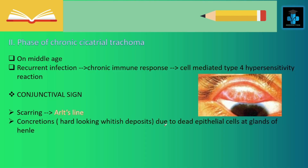We have completed the first phase. Now let's move on to the second phase — the phase of chronic cicatricial trachoma. This is more common among middle-aged people. Because of recurrent infection, there will be a chronic immune response, specifically cell-mediated type 4 hypersensitivity reaction. In the conjunctival signs here, we can appreciate scarring. Due to the scarring, there will be a white line formation known as Arlt's line.